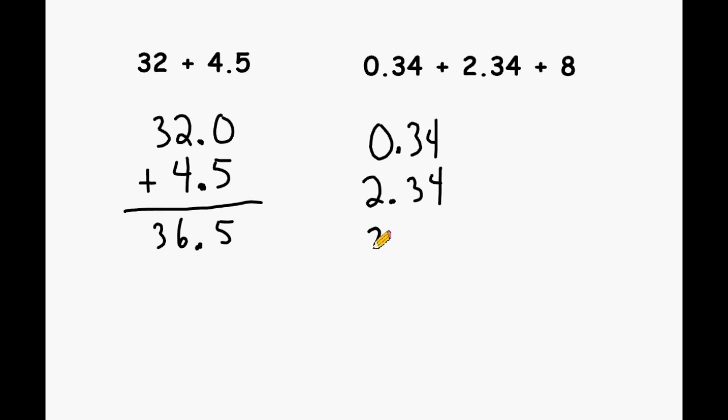We write that in the ones column and may add a decimal right after the number 8 and add zeros to hold these place values. Then we add these values together.